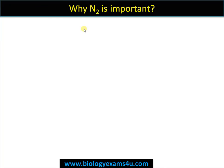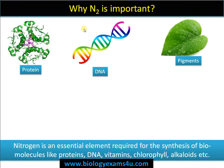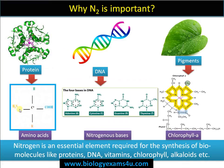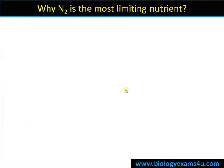Why is nitrogen an important compound for the survival of all living organisms? Nitrogen is an essential element in proteins, DNA, and pigments. In proteins, it is part of the primary structure of amino acids. In DNA, nitrogen bases are made up of nitrogen and carbon. Nitrogen is also present in pigments, vitamins, alkaloids, etc. So for living systems, nitrogen is an essential element, but it is the most limiting nutrient for the growth and reproduction of plants.